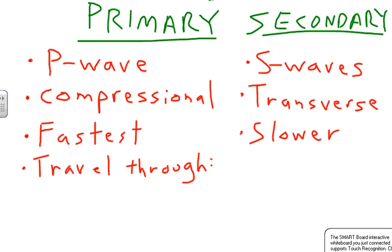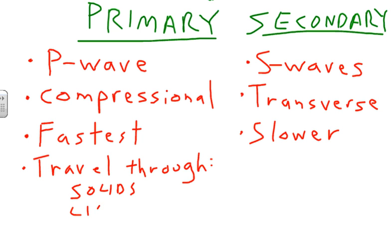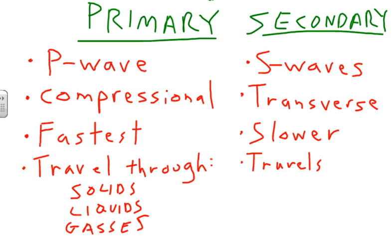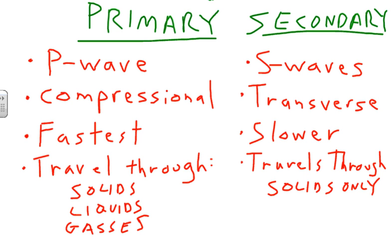The P wave is able to travel through solids, liquids, and gases. The S wave, because of the way it travels, is limited — it can only travel through solids.